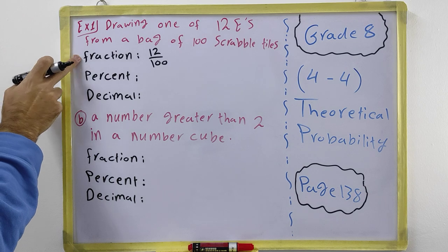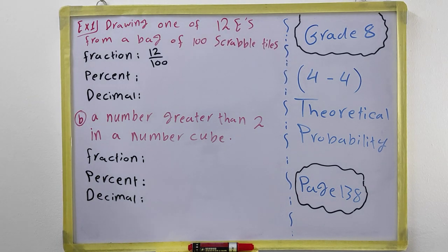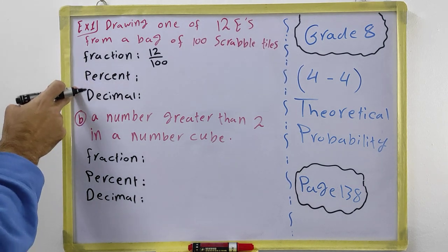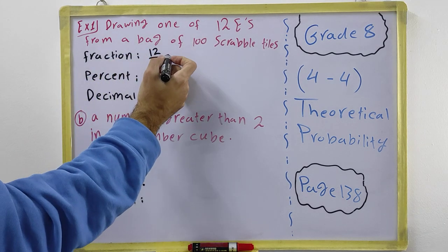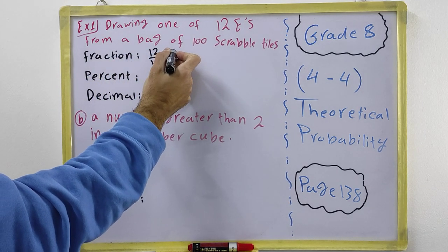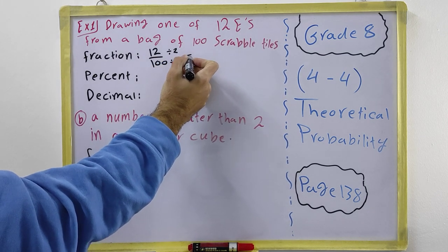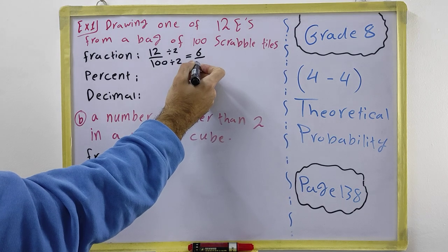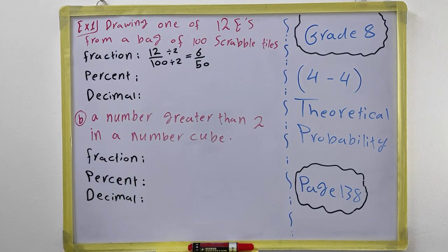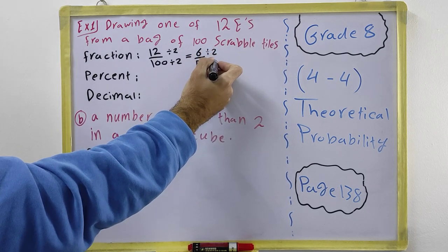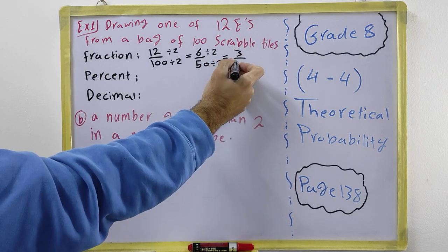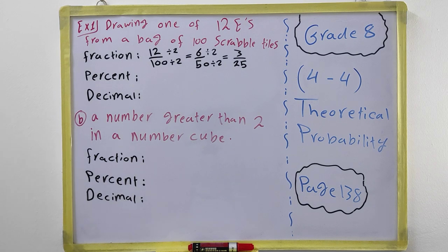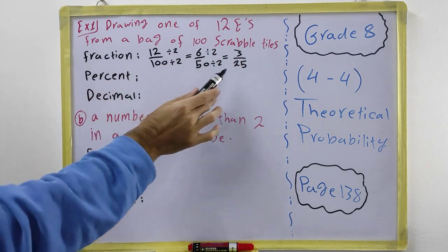This question asks for fraction, percent, and decimal. For the fraction, you must always simplify to simplest form. We can divide both by 2 to get 6 over 50, then divide by 2 again to get 3 over 25. Both 3 and 25 cannot be divided by 2, 3, or 5, so we cannot simplify further.